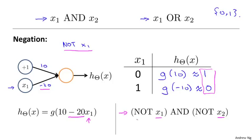So this logical function NOT x1 AND NOT x2 is going to be equal to 1 if and only if x1 equals x2 equals 0. So this logical function is equal to 1 if and only if both x1 and x2 are equal to 0. And hopefully you should be able to figure out how to make a small neural network to compute this logical function as well.